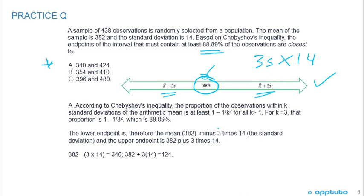So yeah, and here's also the math according to Chebyshev. So you can see 1 minus 1 over K squared. For K equals 3, that's going to solve to be 89%. So we're going to start with the sample mean is 382, and we're going to go 3 standard deviations to the right, and we're going to go 3 standard deviations to the left,